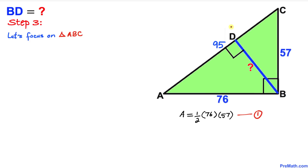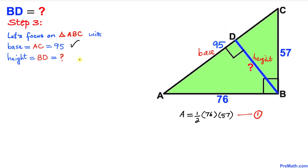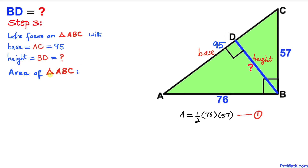Now let's focus on triangle ABC once again. The difference is that this time our base is going to be AC and BD is going to be our height. Our base AC is 95 and height BD is what we need to find. Let's go ahead and calculate the area of triangle ABC using base 95 and height BD.